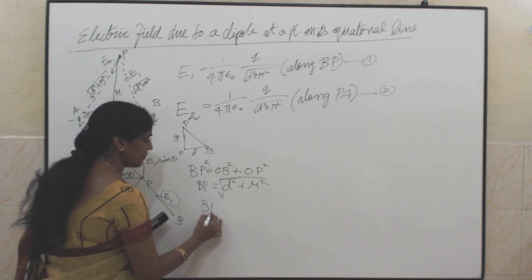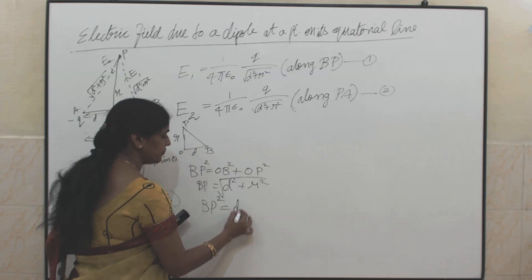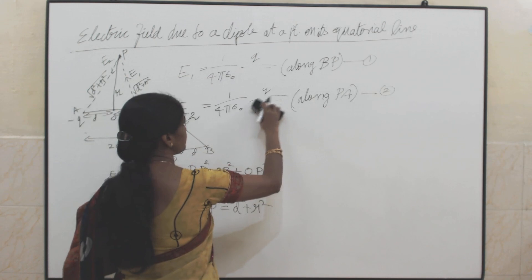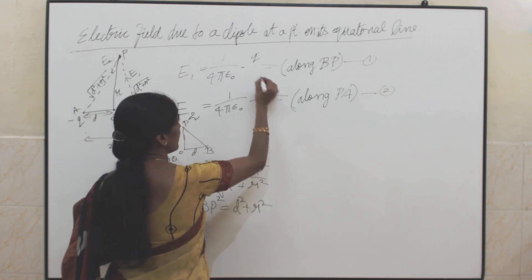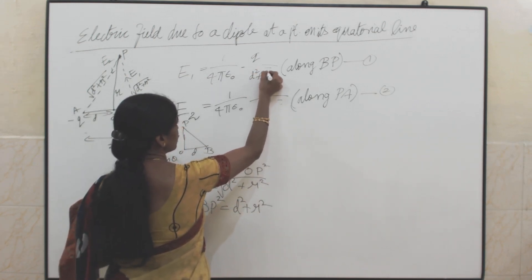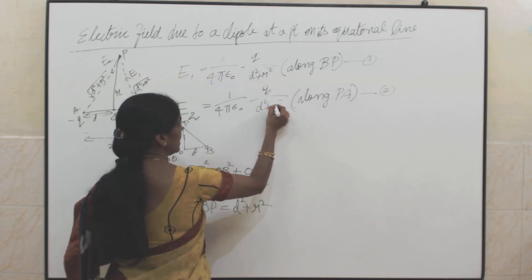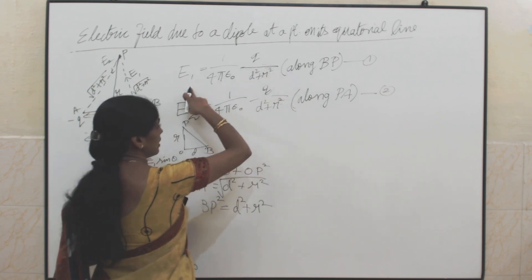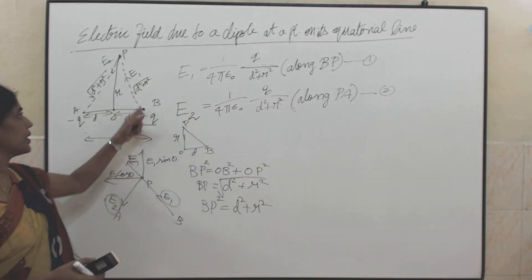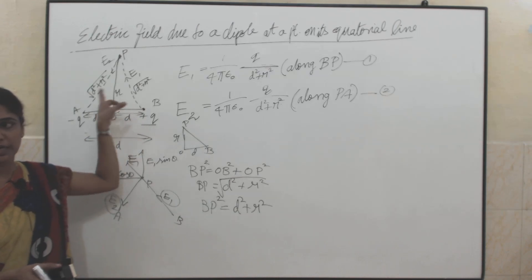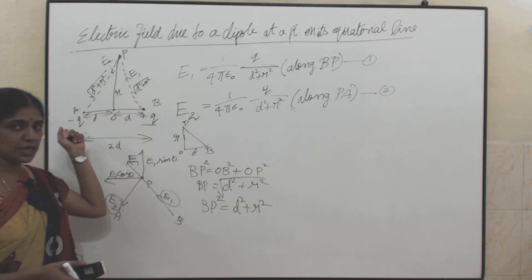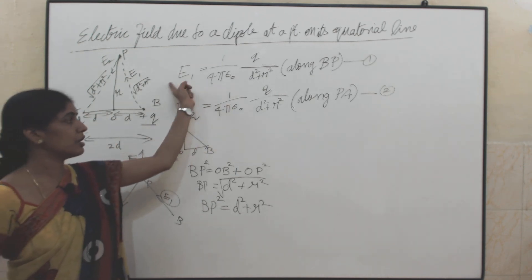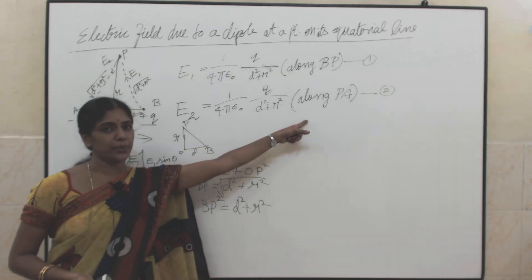If it is BP squared, it will be D squared plus R squared, giving us D squared plus R squared in the denominator. To see the direction of these two electric fields: E1 will be along BP since it is plus Q, the lines of force will be pointing away. Since the other charge is negative, the lines of force will be pointing towards. So E1 is along BP and E2 is along PA.